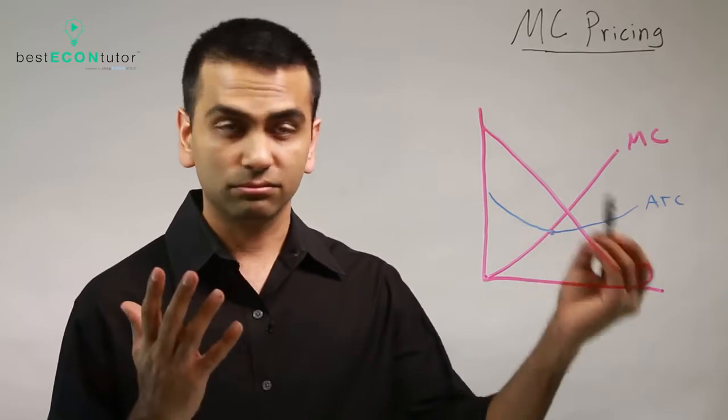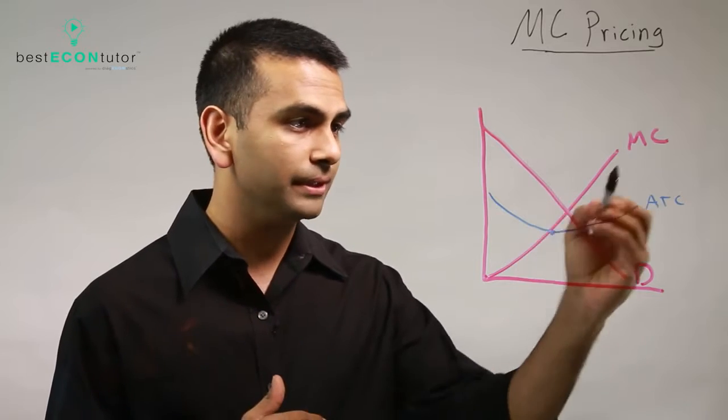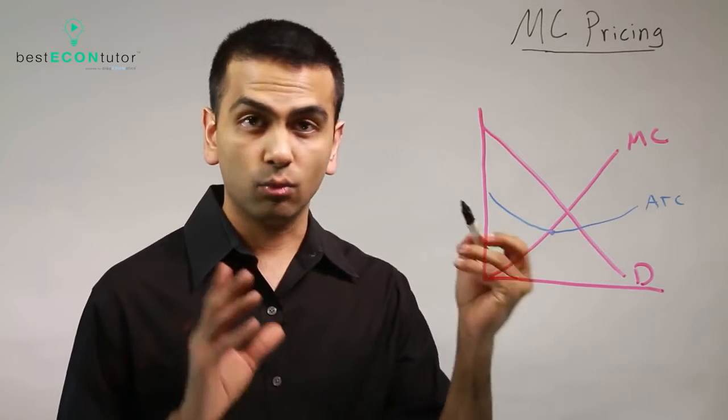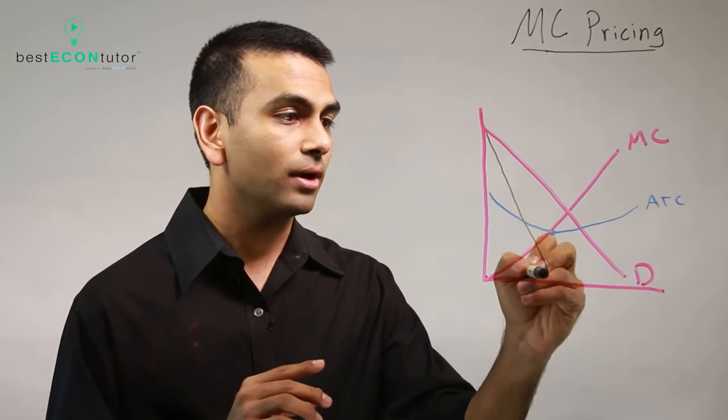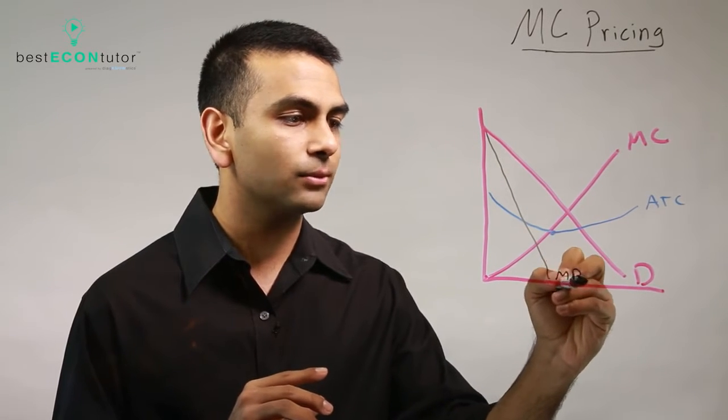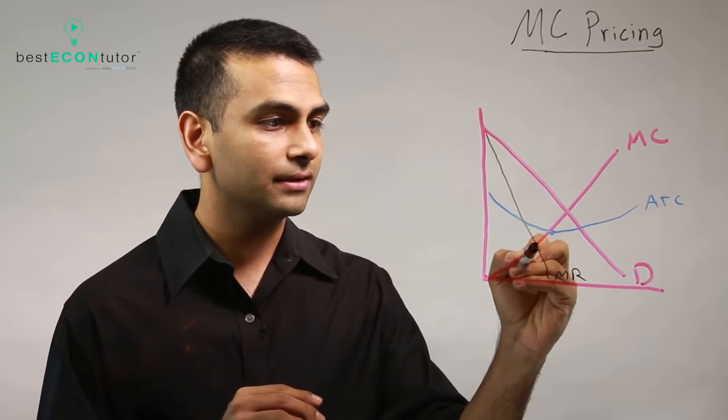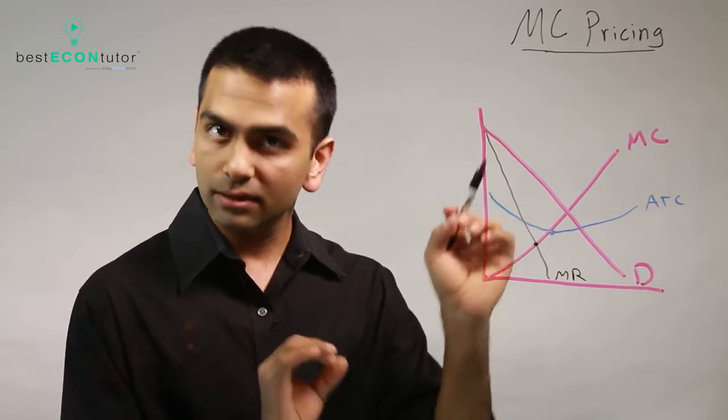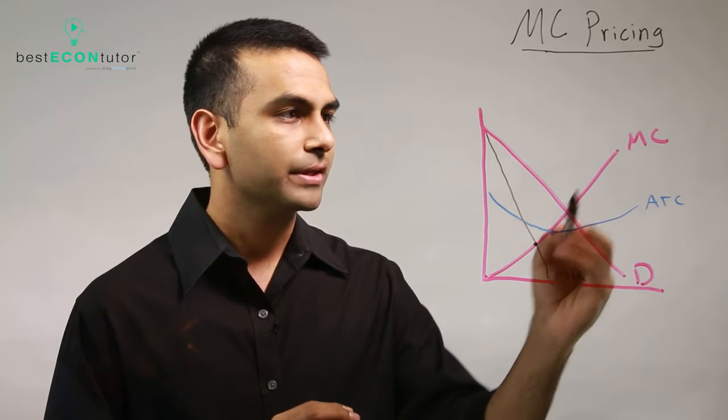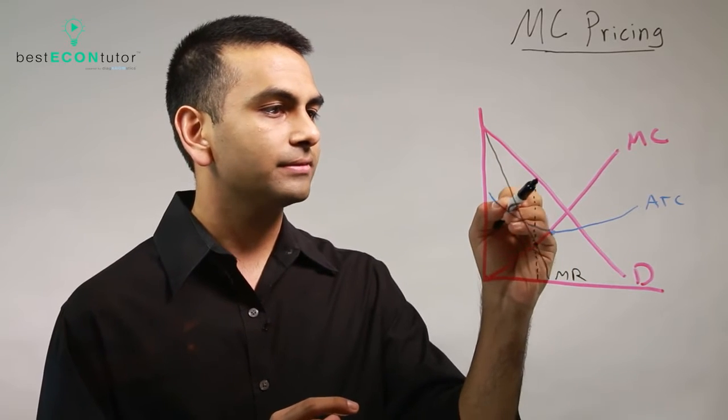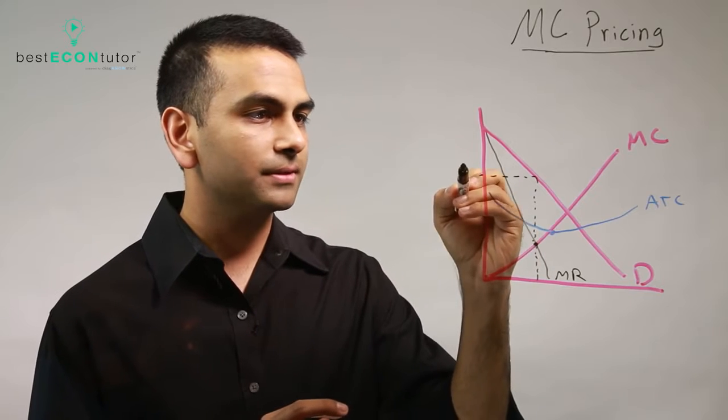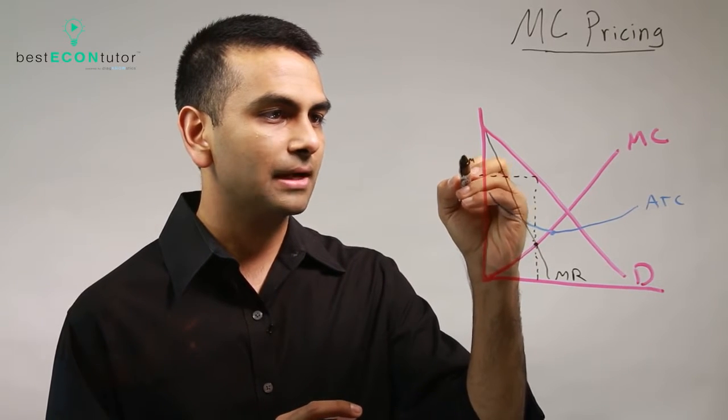Let's say this is the graph of a regular monopoly. So we know that they're going to produce where the MR—so you actually have to go out of your way to create the MR curve. See where the MR intersects MC. So when there's a lot of graphs, you just gotta carefully look at which one's which. So MR equals MC at this quantity, and the price that they're going to charge is up to the demand curve. So that's the price that the monopoly is going to charge.